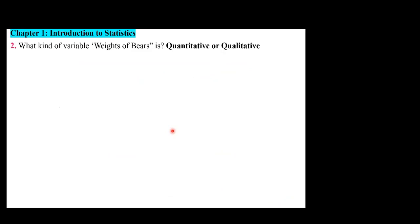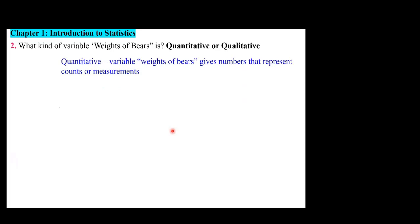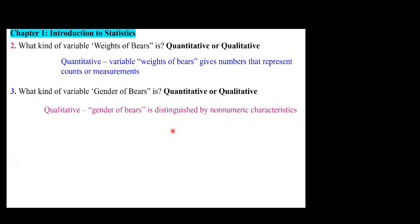What kind of variable is weight? It's quantitative — it gives numbers that represent counts or measurements. Gender would be qualitative, distinguished by non-numeric characteristics. There are numbers that are considered qualitative simply because they don't have a meaningful numerical value, such as a zip code or student ID.